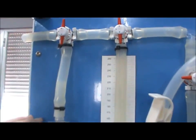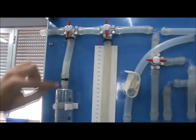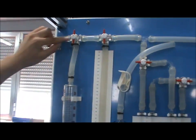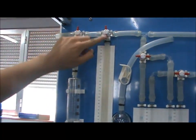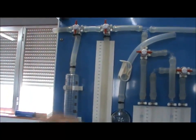Arrange valve VT3 to allow air to flow from the syringe to the atmosphere, and arrange valve VT2 to connect to the U-shaped vessels.